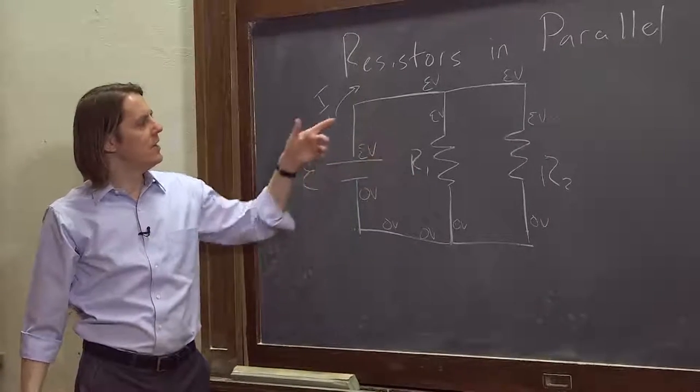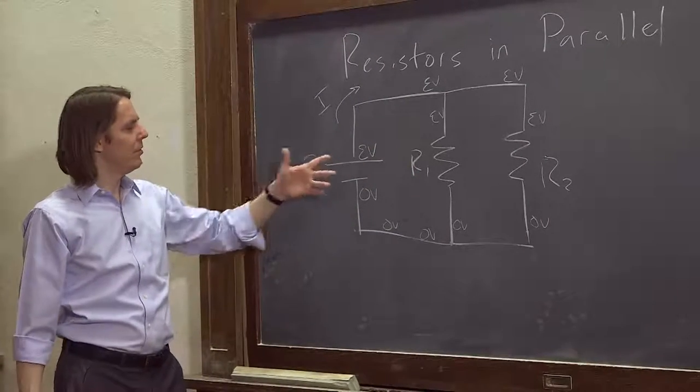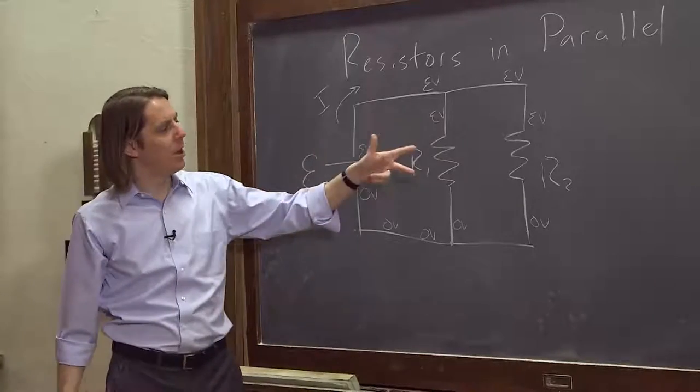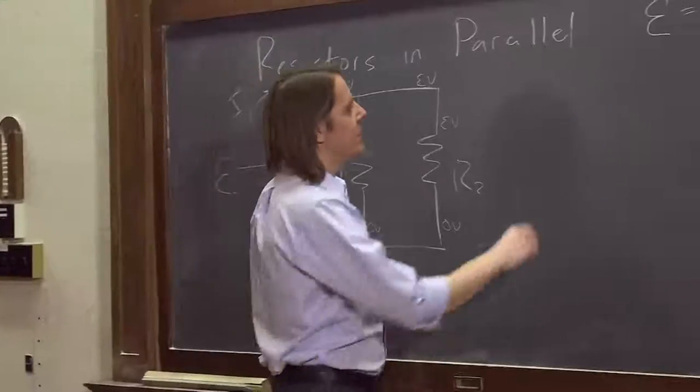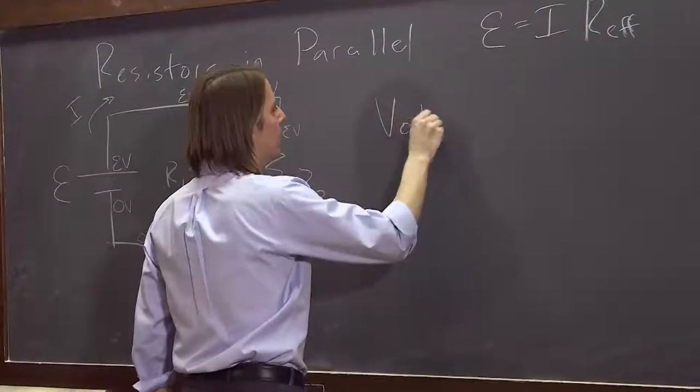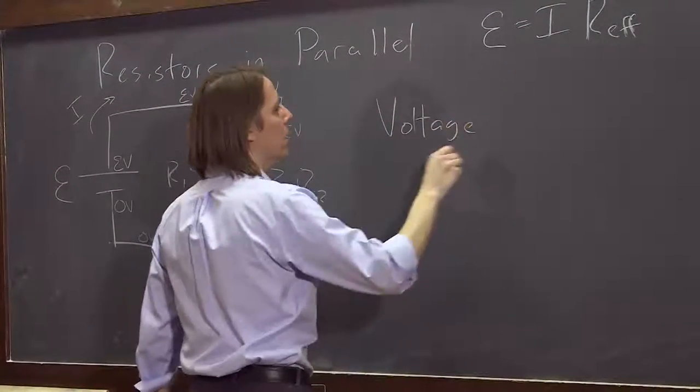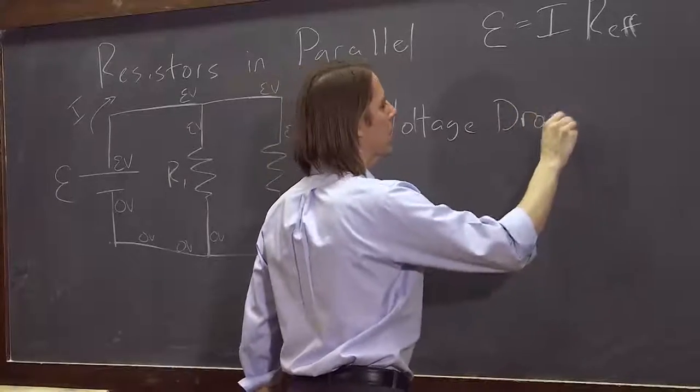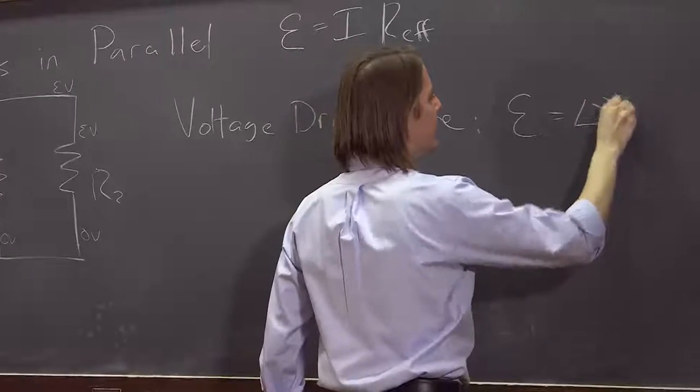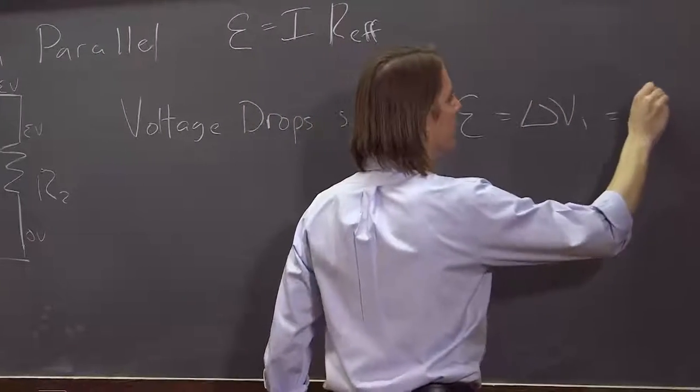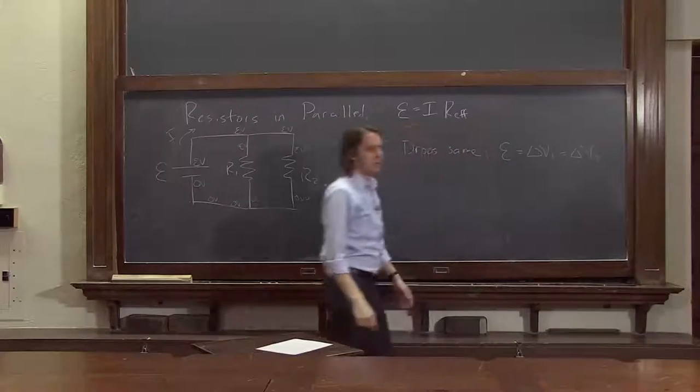So what we see here is that the EMF drop from the battery, or the EMF supplied by the battery, drops across each resistor. So we see that the voltage drops are the same. And what that means is that E equals delta V1 equals delta V2.